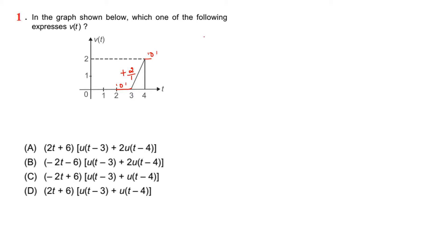Next, I am going to explain how to write the equation for this signal. In step number 1, what are the points where signal changes occur? Those points we need to consider. Here, see point 3 — the slope changes from 0 to plus 2. So the first point is R of t minus 3.